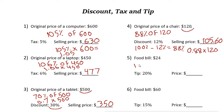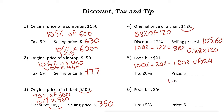One hundred percent of twenty four dollars is just twenty four dollars, and you need to add twenty percent, so you want to pay one hundred twenty percent of twenty four dollars. One hundred twenty percent is one point two, so use your calculator: one point two times twenty four equals twenty eight dollars and eighty cents.